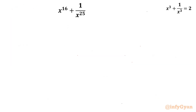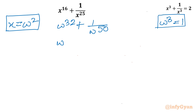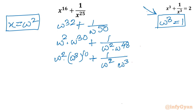Now for x = ω². Substituting gives (ω²)^16 + 1/(ω²)^25 = ω^32 + 1/ω^50. I rewrite: ω^32 = ω² · ω^30 and ω^50 = ω² · ω^48. Using ω^30 = (ω³)^10 and ω^48 = (ω³)^16, both equal 1.